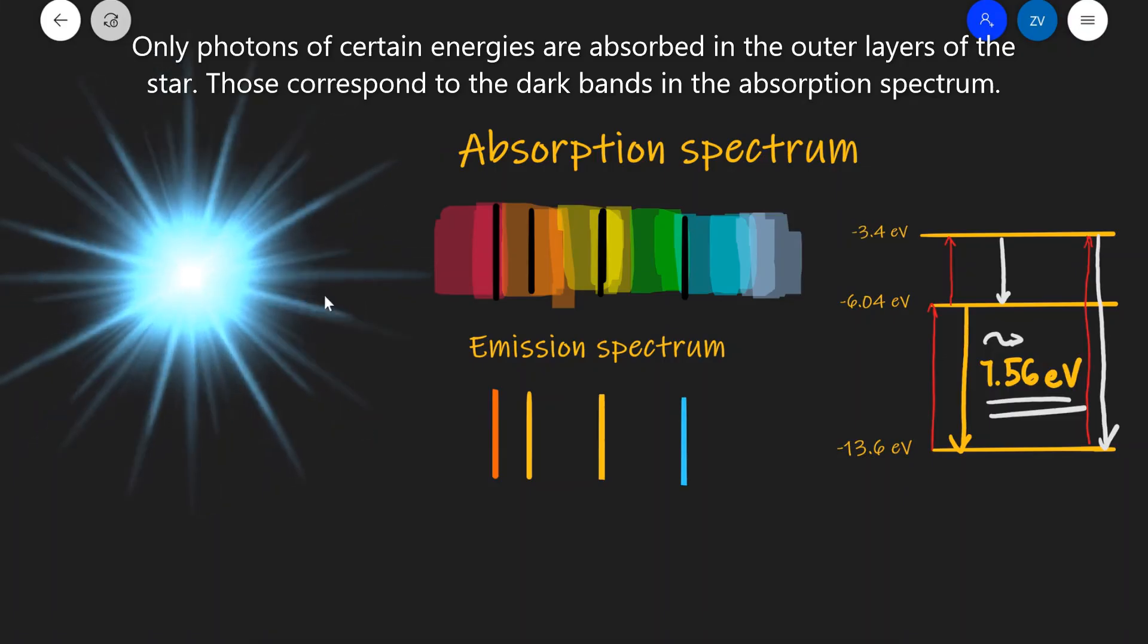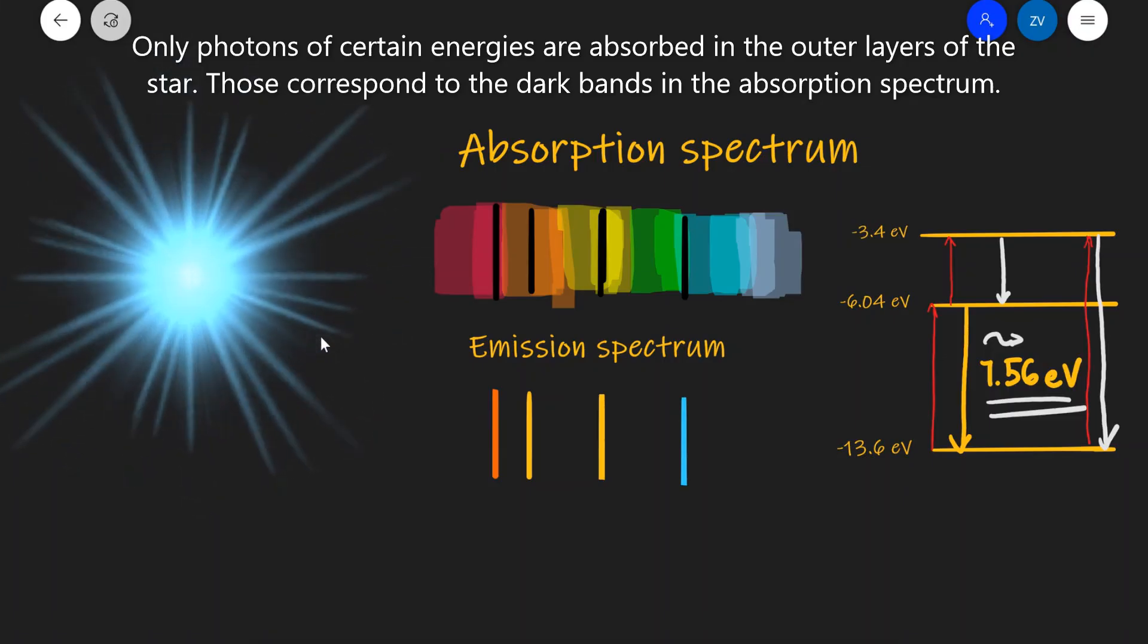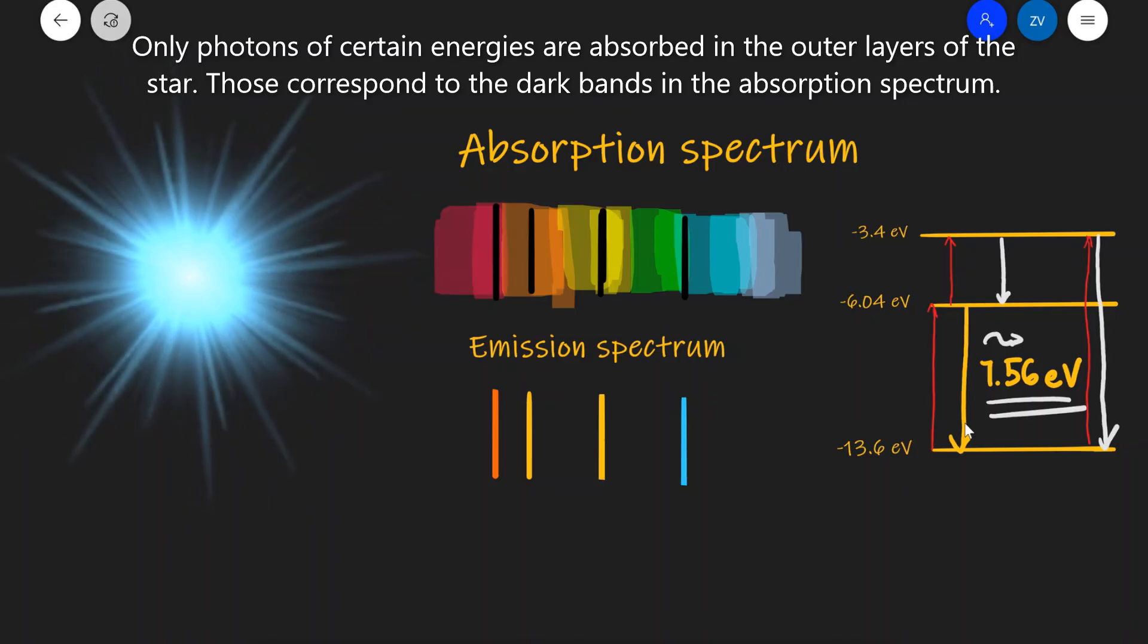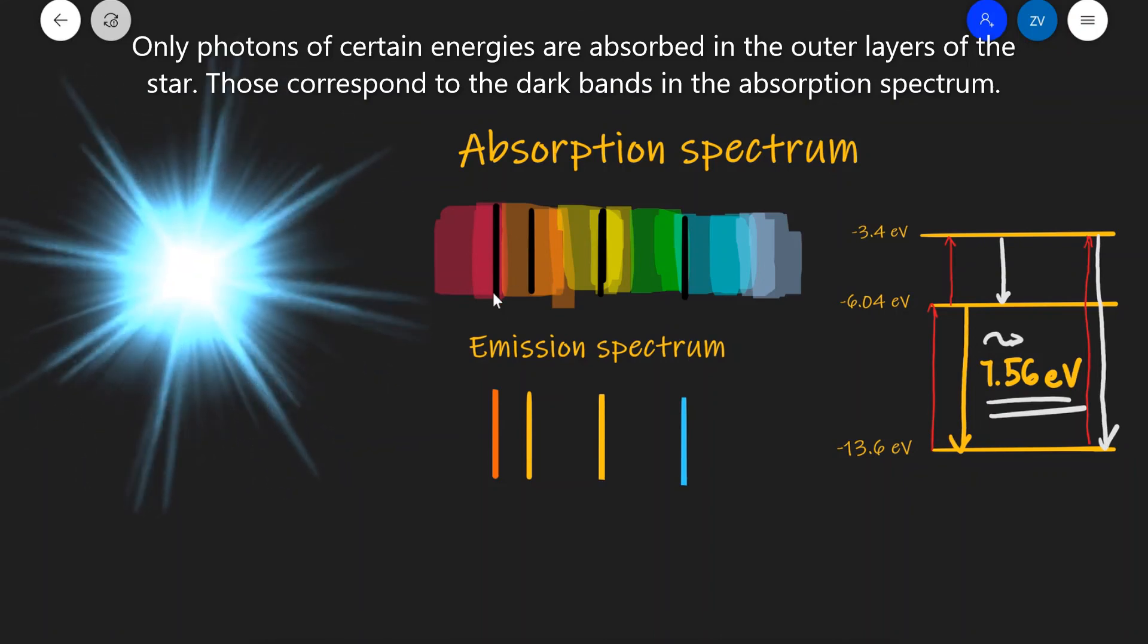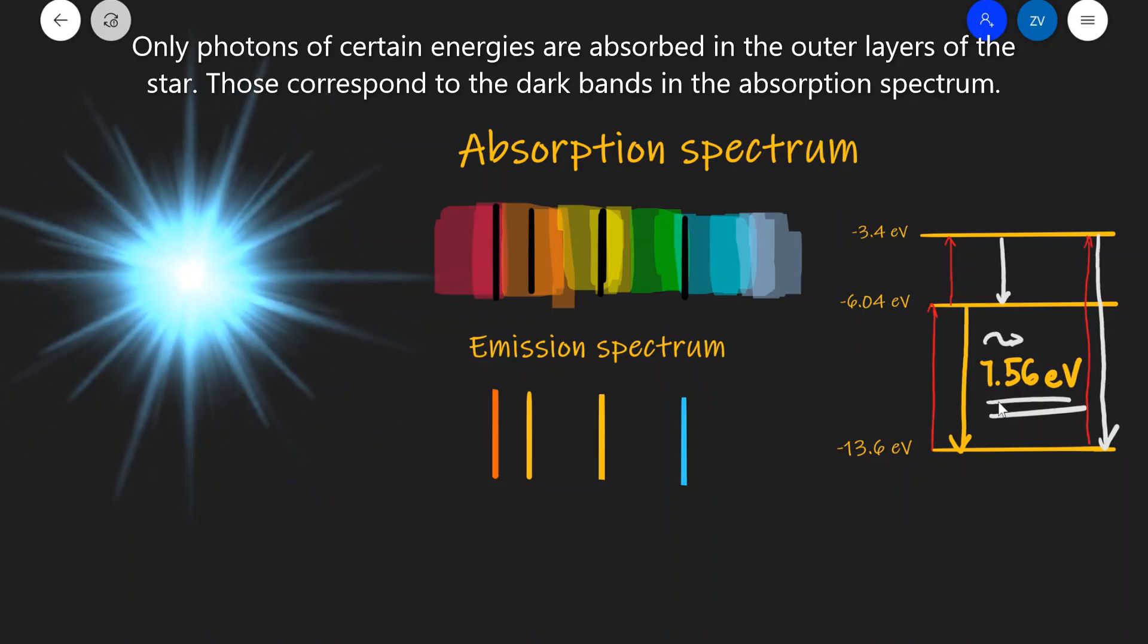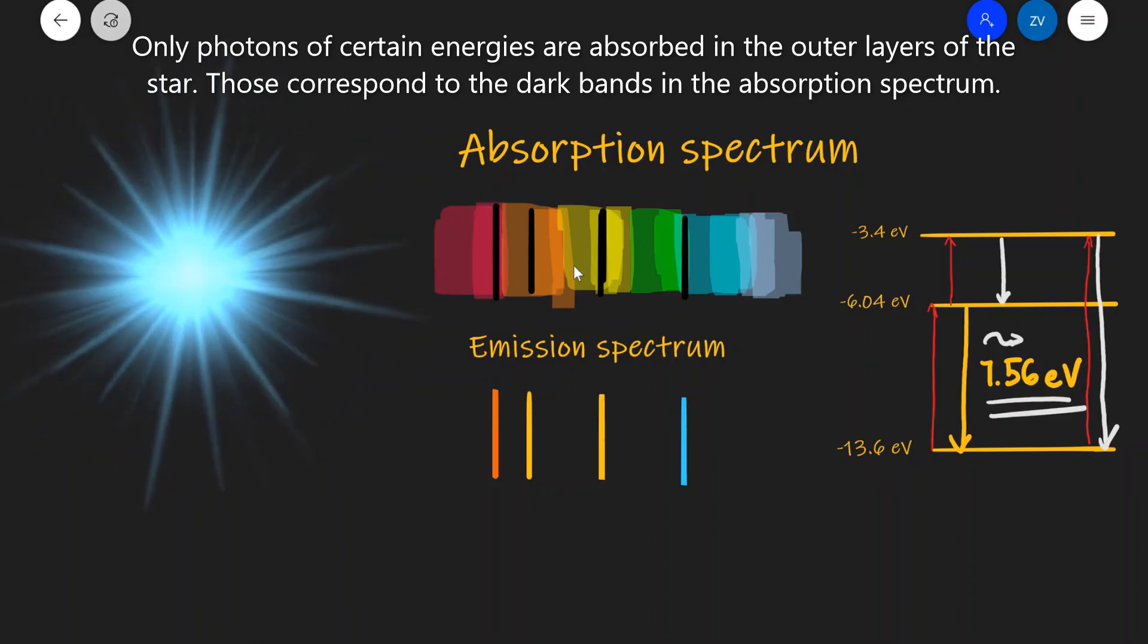Now those specific energies are going to correspond to the specific energies that can be absorbed by whatever substance is on the surface of the star. For instance, if there was quite a lot of hydrogen, we're expecting to find gaps in the spectrum at about 7.56 electron volts. In general, those dark lines are going to correspond to frequencies, to energies of photons that have been absorbed.